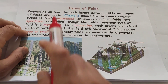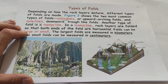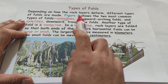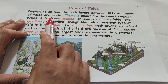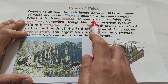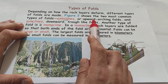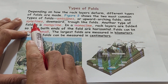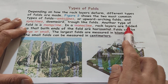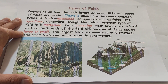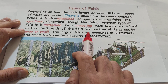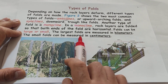The type of folds depends on how the rock layers deform — that means are destroyed. Different types of folds are formed. Figure 2 shows the two most common types of folds: anticline, or upward-arching folds, and syncline, or downward trough-like folds. Another type of fold is monocline — in a monocline, rock layers are folded so that both ends of the fold are horizontal. Folds can be large or small: the largest folds are measured in kilometers, while small folds can be measured in centimeters.